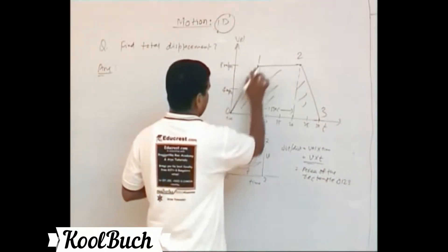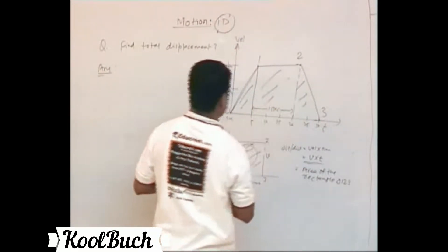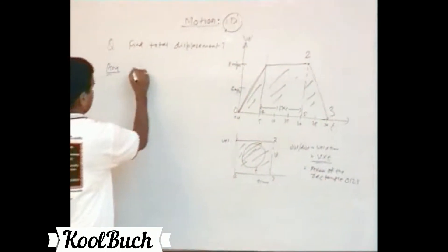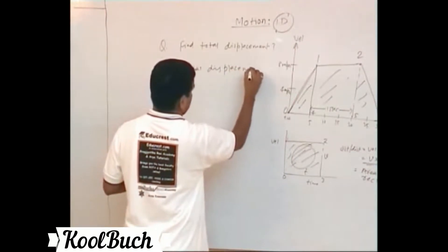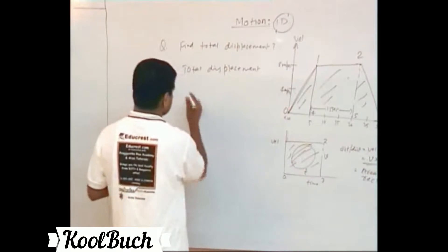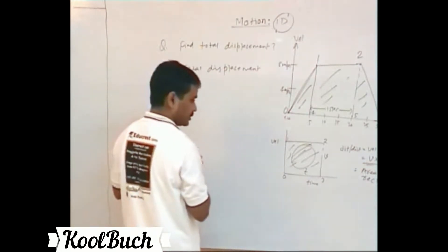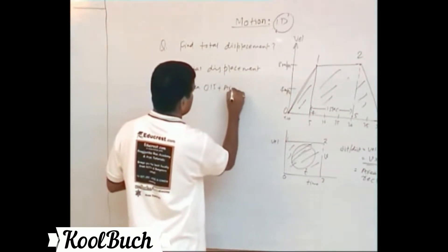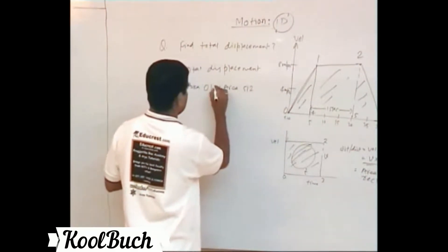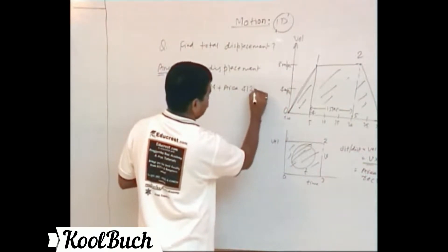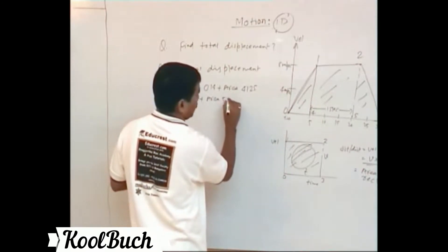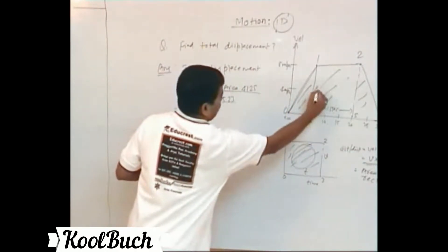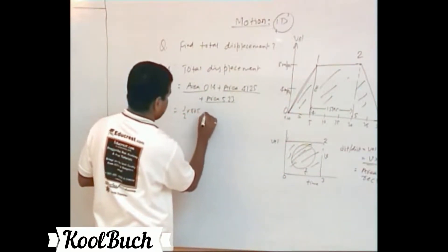Whatever area is covered under region O-1-2-3 is the total displacement. Naming the points, total displacement equals area of triangle O-1-4 plus area of rectangle 4-1-5 plus area of triangle 5-2-3. The first region is a triangle, the middle is a rectangle, and the last is a triangle again.